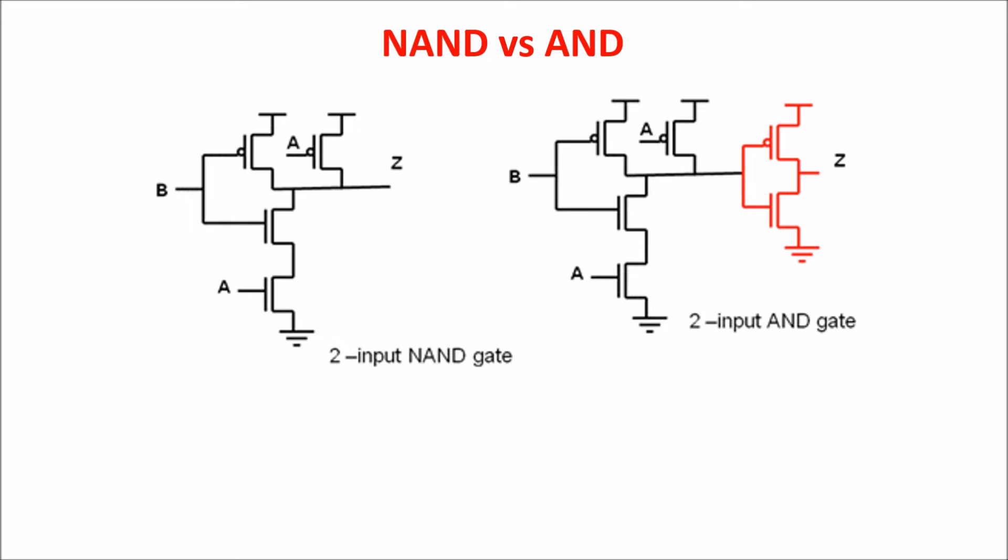First, we see the topology of other gates, and you can realize that the AND gate is built from the NAND gate adding an inverter, so the propagation delay of the AND is higher than that of the NAND because it's that of the NAND plus that of the inverter.